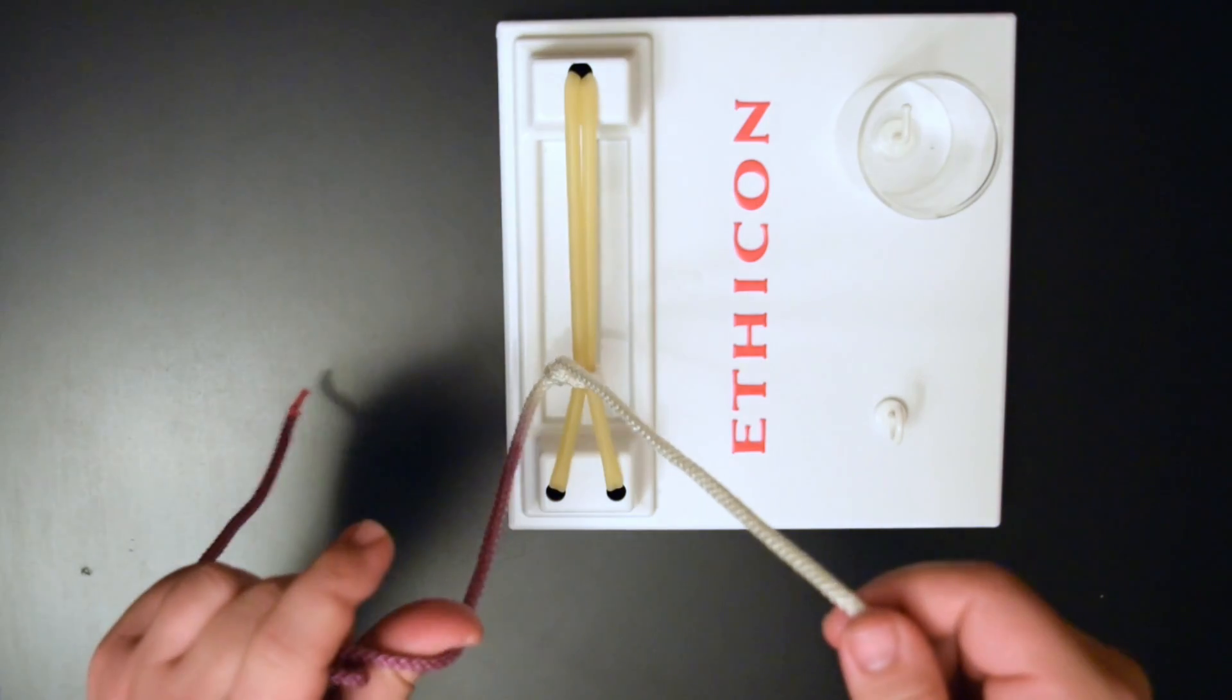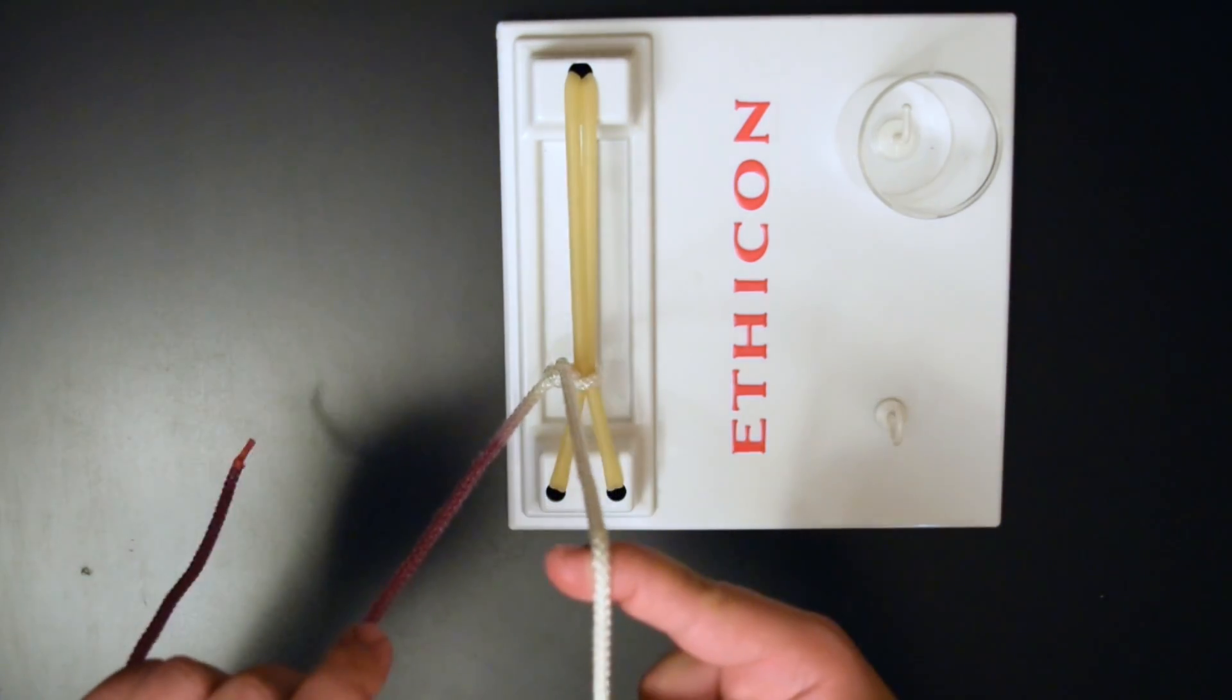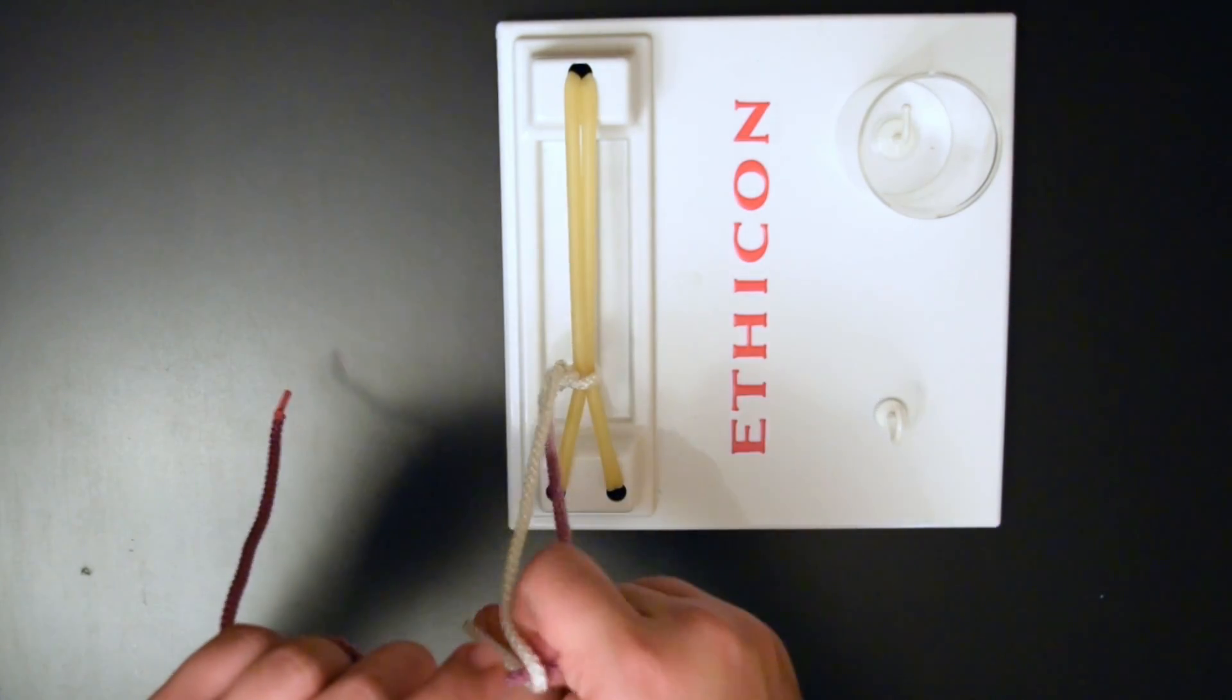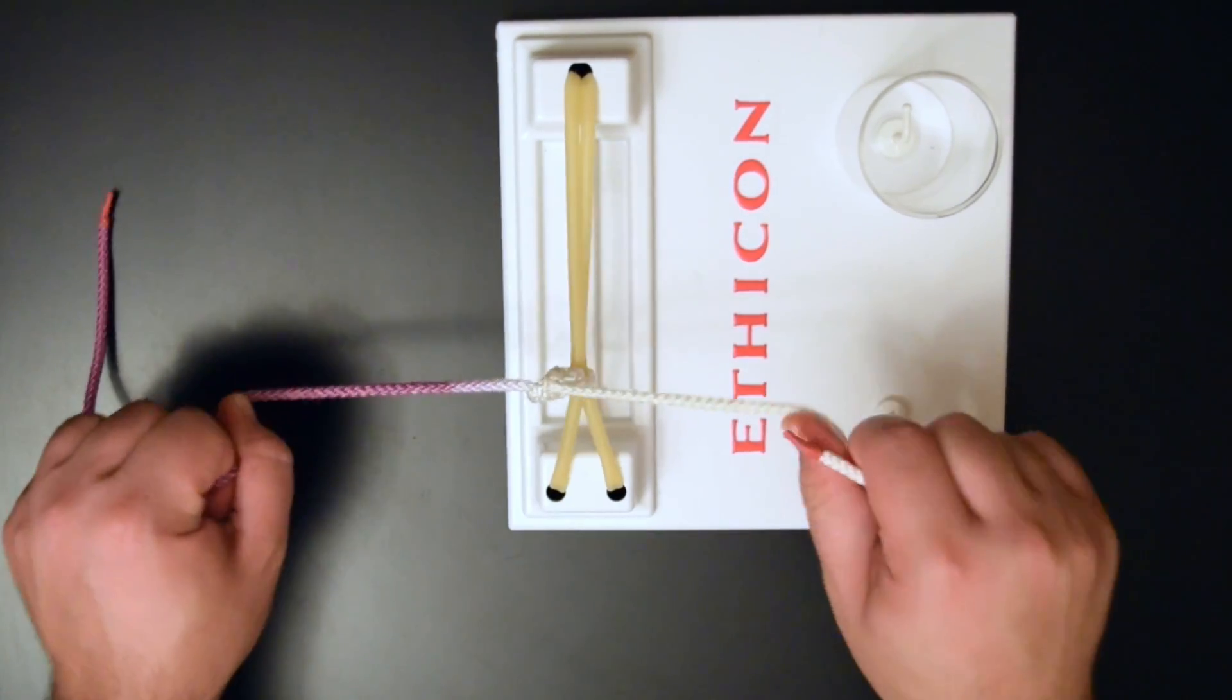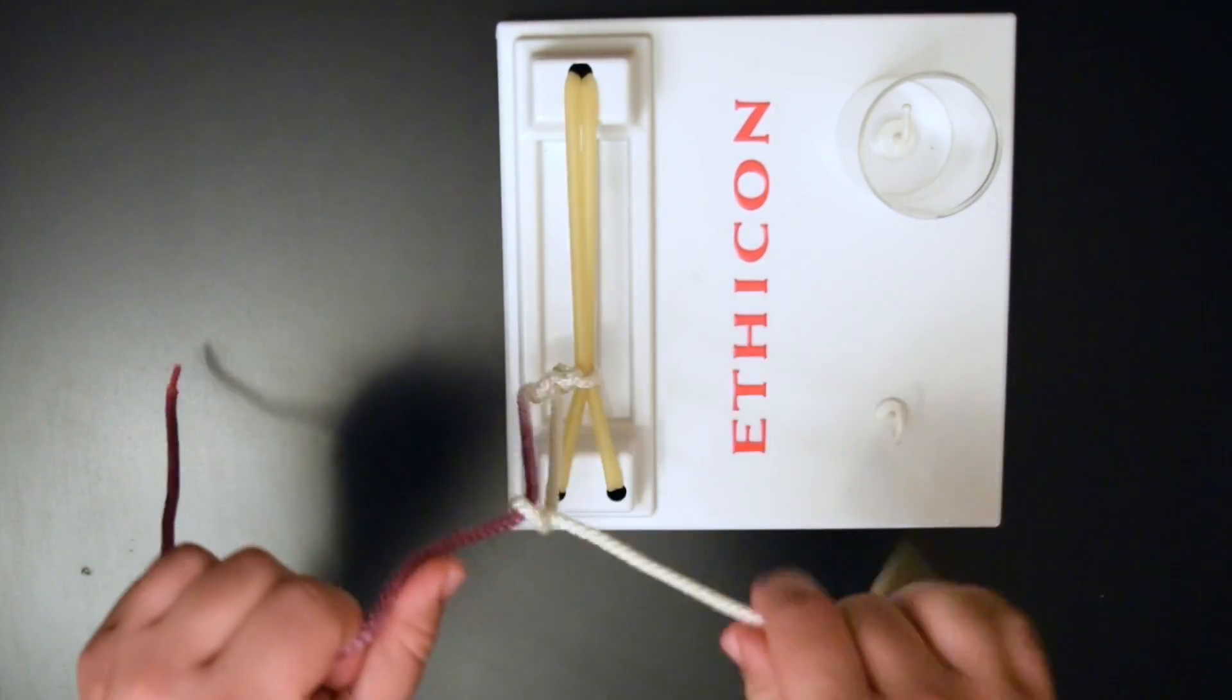And then to lock this you're going to put throws in the opposite direction. So utilize your index finger. Put a throw in the opposite direction. And one more to lock it in place.